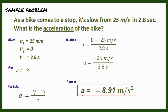The negative sign indicates that the car decreased its velocity. This means the sample problem is showing negative acceleration, or what we call deceleration. We get the unit of acceleration from the unit of change in velocity, which is meters per second, and the time, which is seconds — so that gives us meters per second squared.